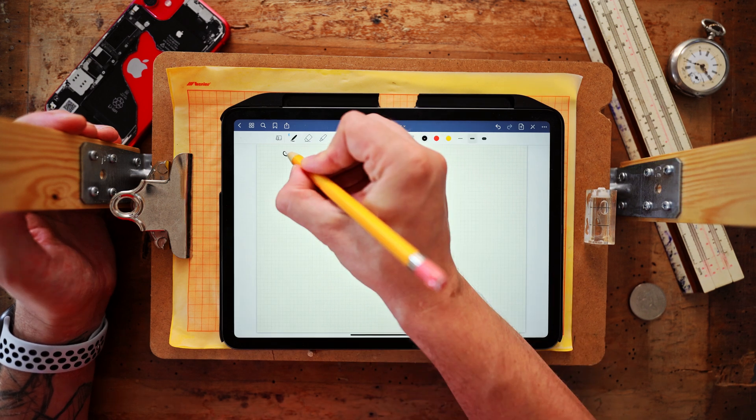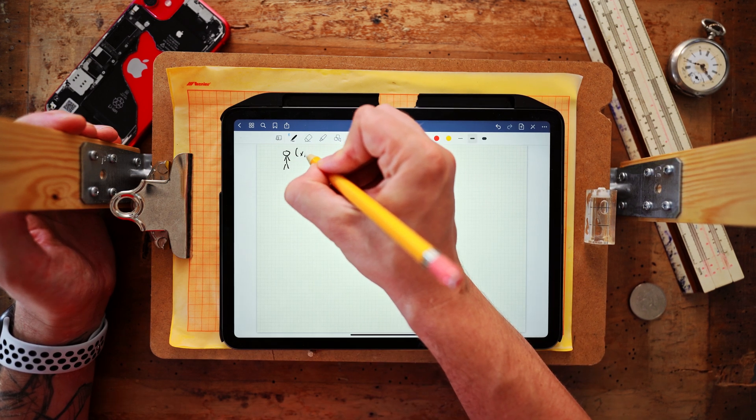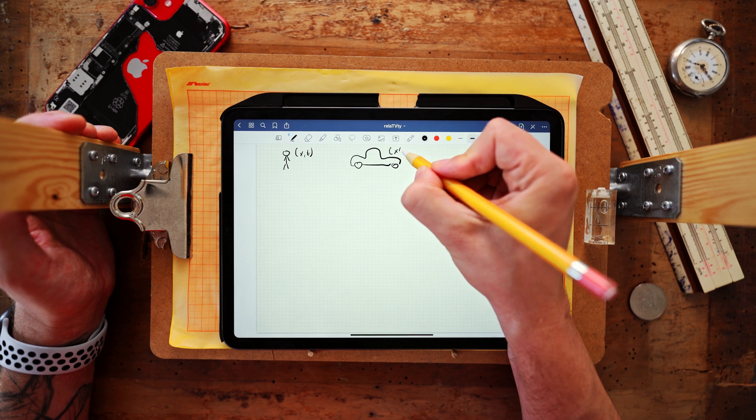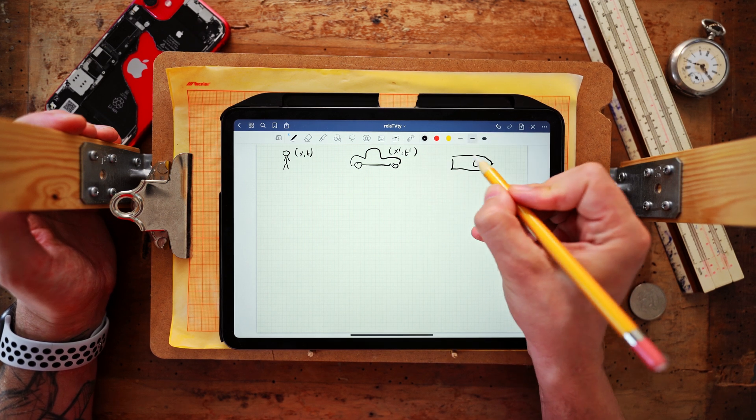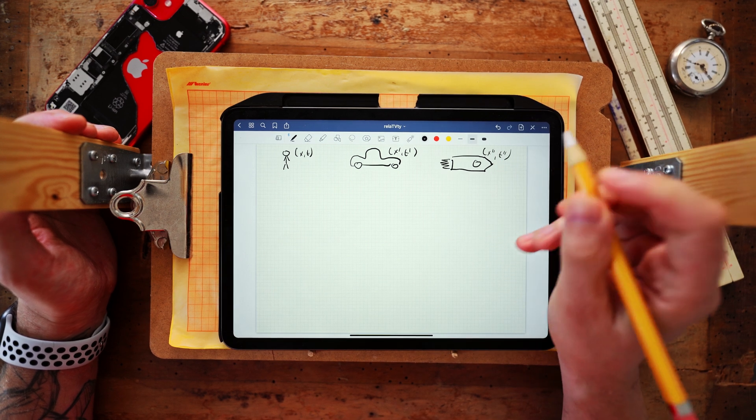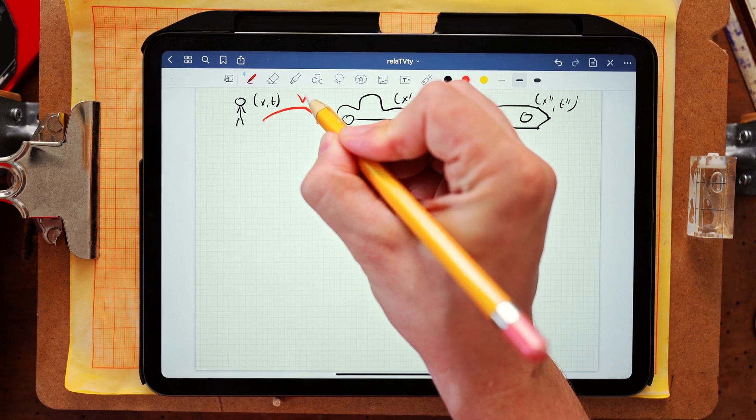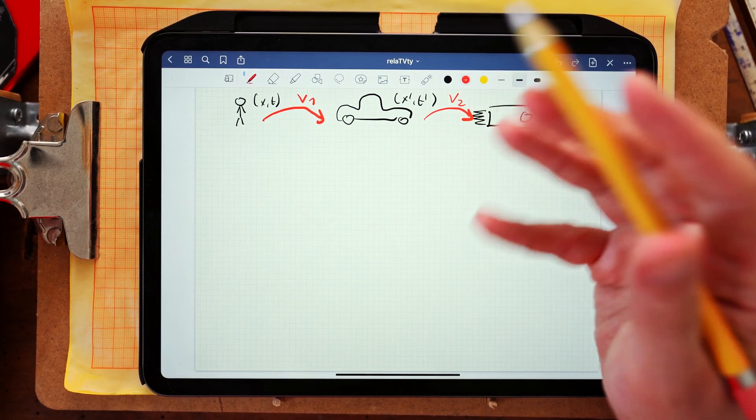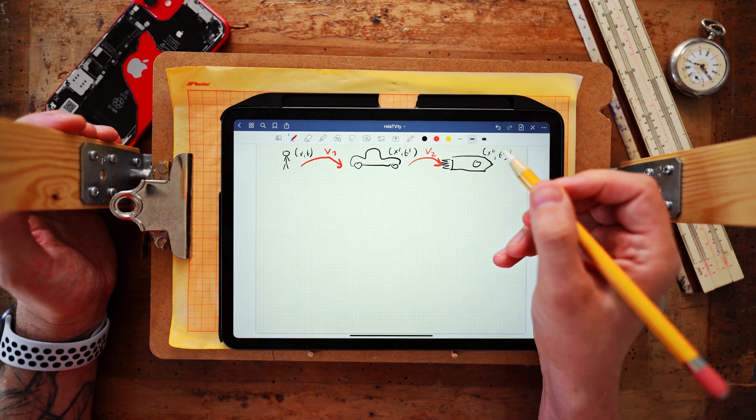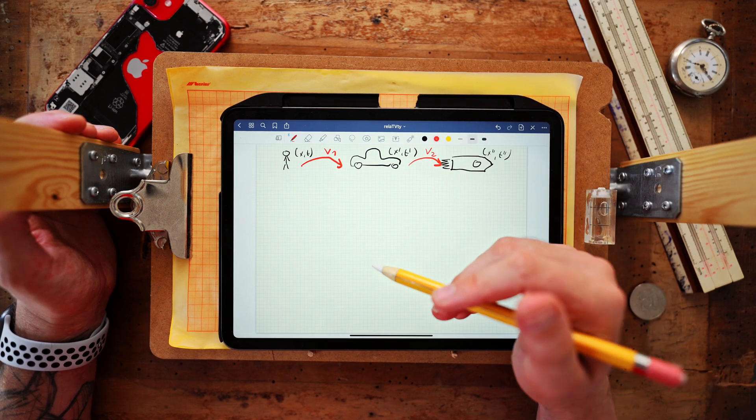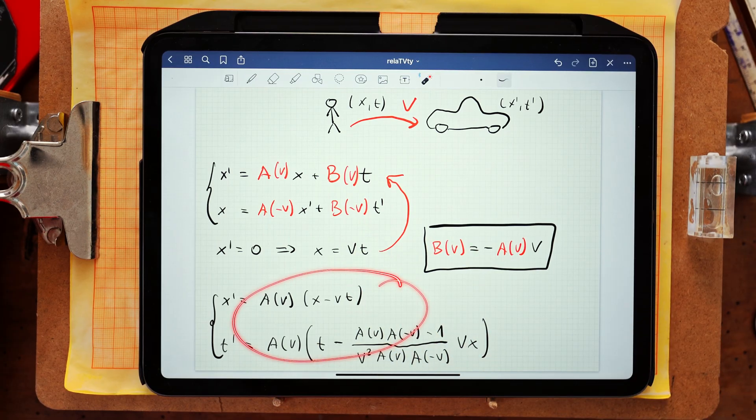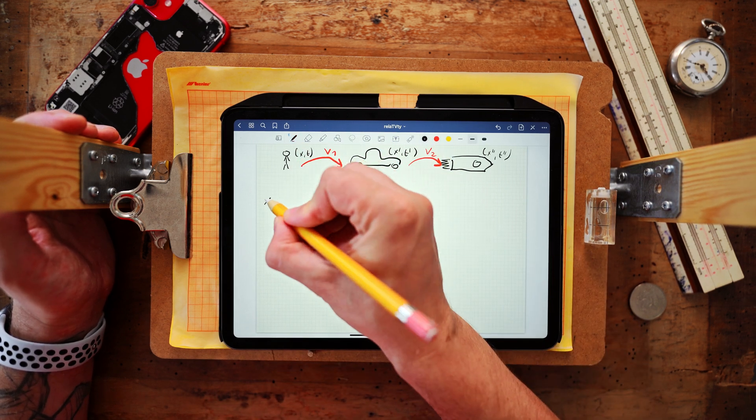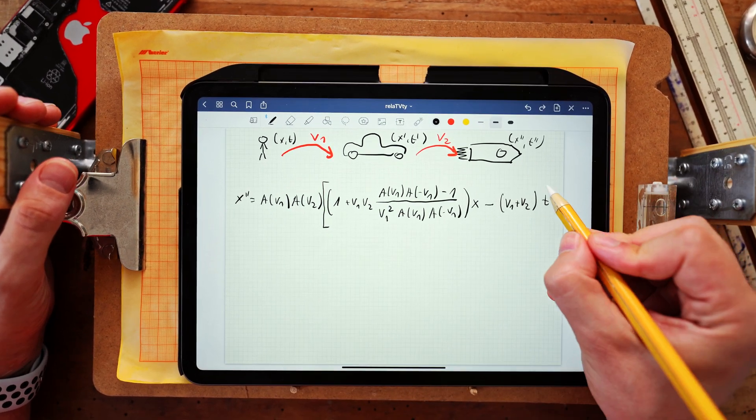So to find the unknown coefficient a we will consider not 2 but 3 inertial observers. The resting one will use unprimed coordinates x and t. The second one moving in a car will use primed coordinates x' and t' and the third one moving in a rocket will use double primed coordinates. So suppose that the car is moving with relative velocity v1 relative to the unprimed observer and the rocket is moving relative to the car with some relative velocity v2. And our first task is to determine the transformation formulas between the resting observer and the rocket. And for that all we have to do is just to iterate our transformation formulas corresponding to motion with velocity v1 followed by motion with velocity v2. And the task is pretty straightforward and here is the result that depends on both velocities v1 and v2.